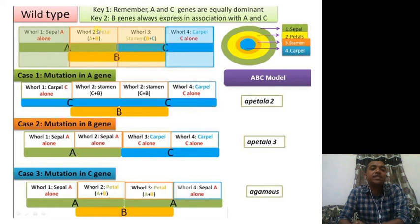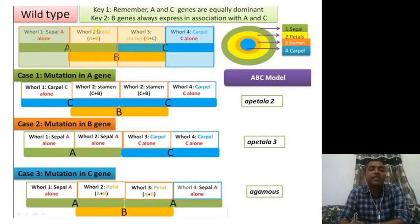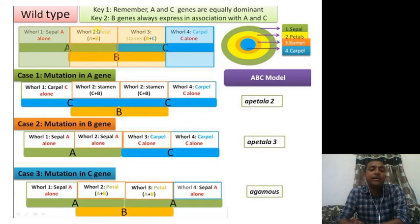Now let us see what happens when there is a mutation in gene C. Whorl one has gene A — no alteration, so the floral organ is unchanged. Whorl two is also the same. In whorl three, which is B plus C, gene A will take over due to the mutation in C. In whorl four, again with mutation in C, gene A is dominant and gets expressed. This condition results in an Apetala phenotype.